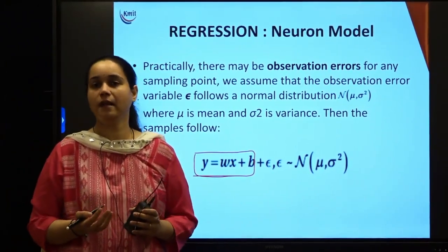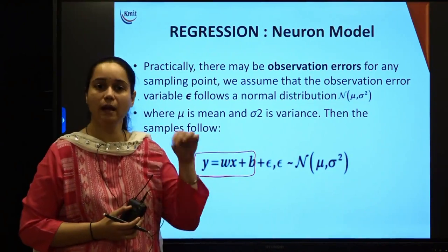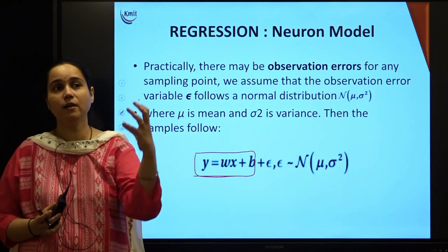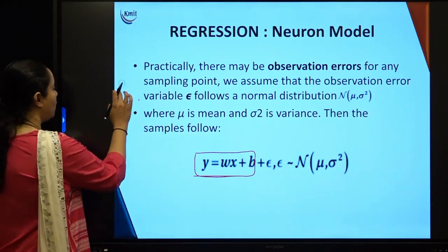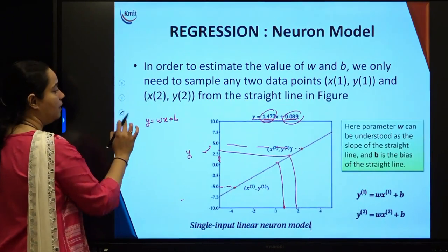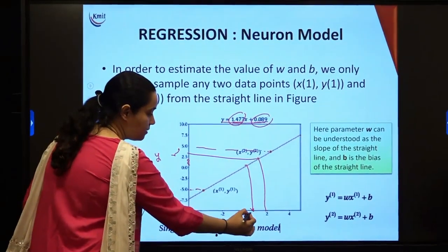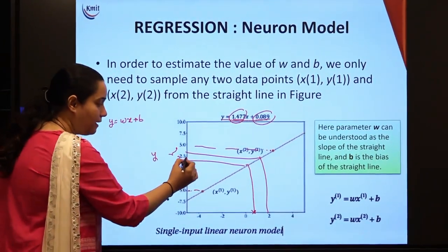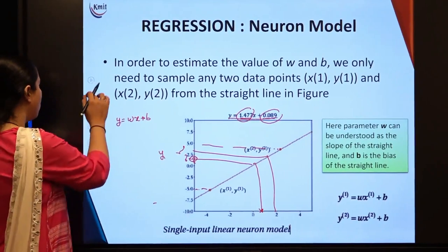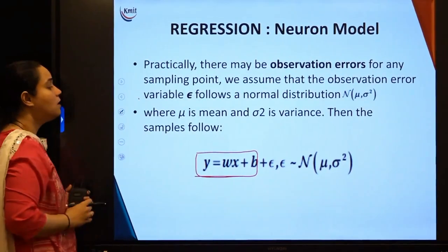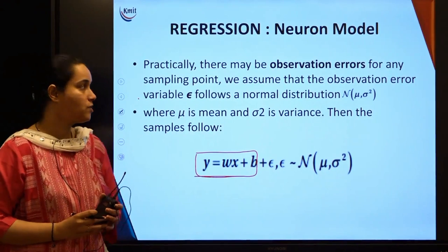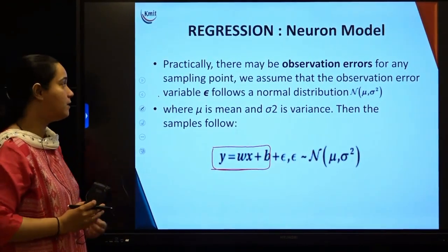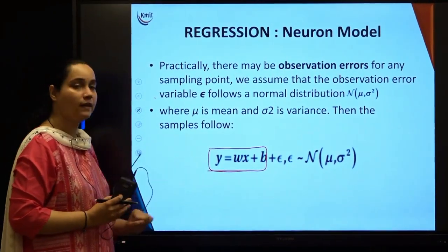Now when I talk on the practical case, being human and having a human eye, we have got observational errors. There can be errors while reading the points — for example, assuming x as 1 and checking where it falls on y. There can be some error in the approximation of this value. Practically there will be errors, and such errors are called observation errors.